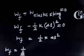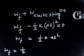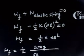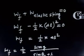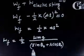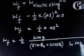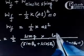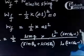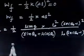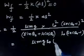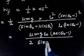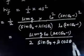Plugging in the values: k is given by μmg divided by [(sinθ₀ plus μ cosθ₀) times L₀(secθ₀ minus 1)], and delta L equals L₀(secθ₀ minus 1). Work done by friction force equals ½ times k times (delta L)², which simplifies — the L₀(secθ₀ minus 1) terms cancel — giving work done equals μmgL₀(secθ₀ minus 1) divided by [2(sinθ₀ plus μ cosθ₀)].